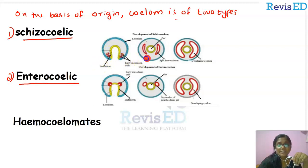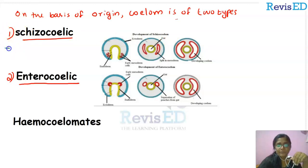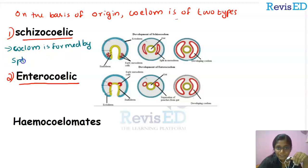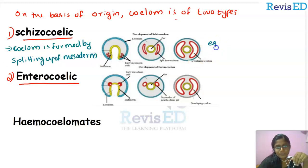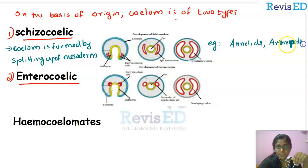As you can see in the picture, there are early mesoderm cells marked in red color. They develop into a pouch and then extend to form a coelom, which is mesodermal in origin. The coelom is formed by the splitting up of mesodermal cells. Examples of schizocoelic animals are annelids, arthropods, and molluscs.